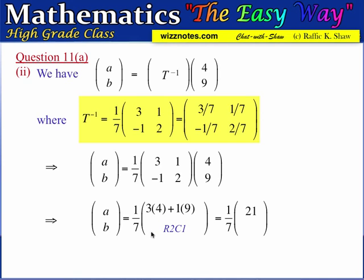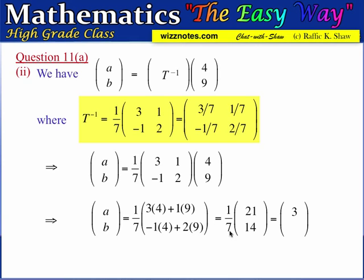For the second element, we multiply the second row by the first column: negative 1 times 4 plus 2 times 9. That is negative 4 plus 18, which equals 14. We then divide each element by 7: 21 divided by 7 is 3, and 14 divided by 7 is 2.